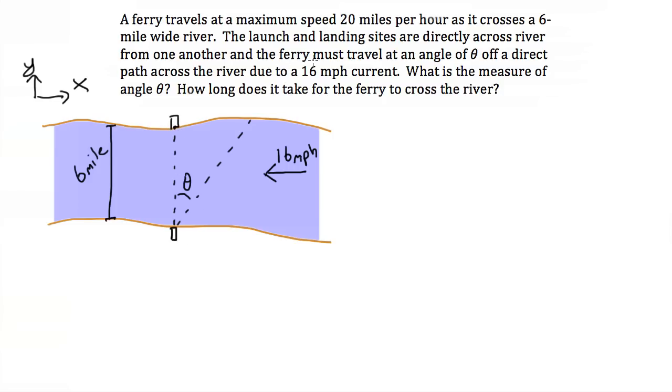So let's assume that our ferry travels at the maximum speed. So this is my velocity vector. It's going at some angle theta, and it's going at the maximum speed, so the length of this vector is 20 miles per hour.